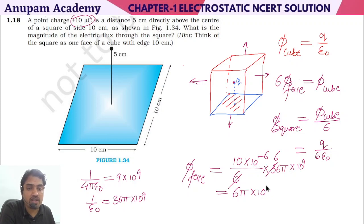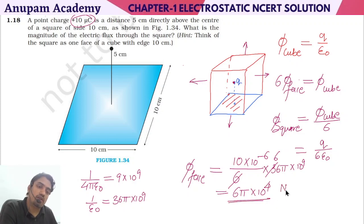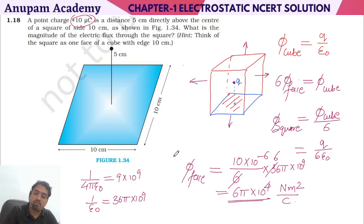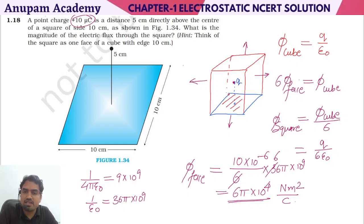That gives 10 to the power 9 minus 6, which is 10³, and combined with the coefficient we get 6π × 10³, approximately 1.88 × 10⁴ Newton meter squared per coulomb. So flux passing through the square — this is the application of Gauss's Law. A very important application. Thank you.